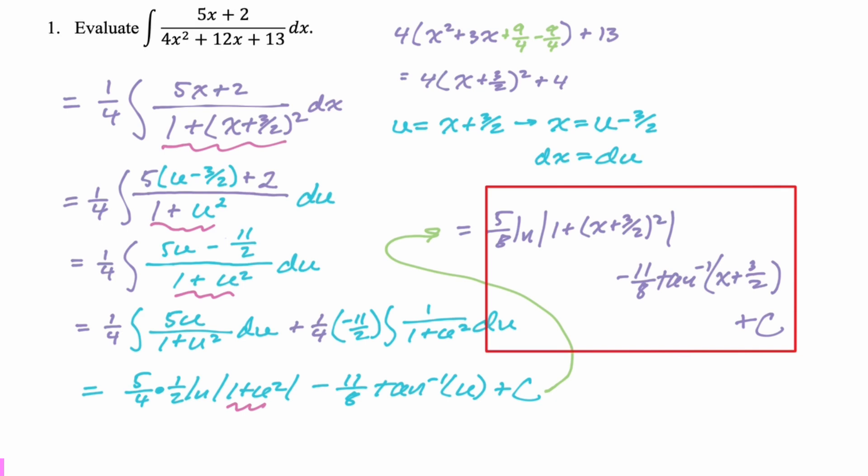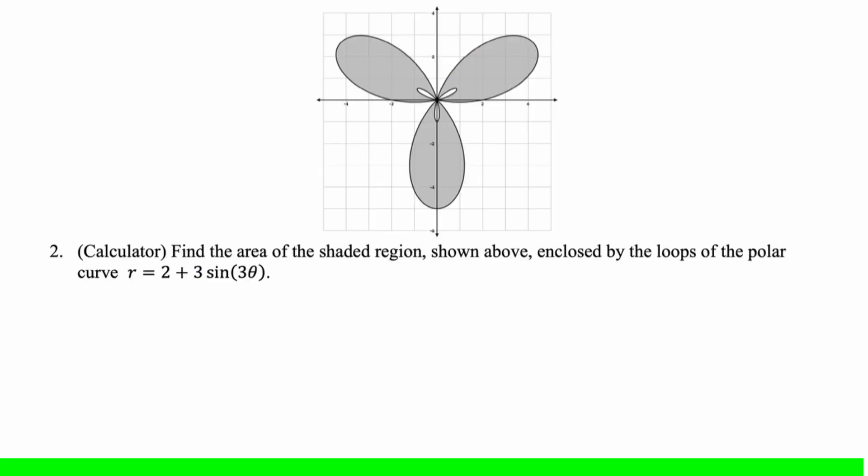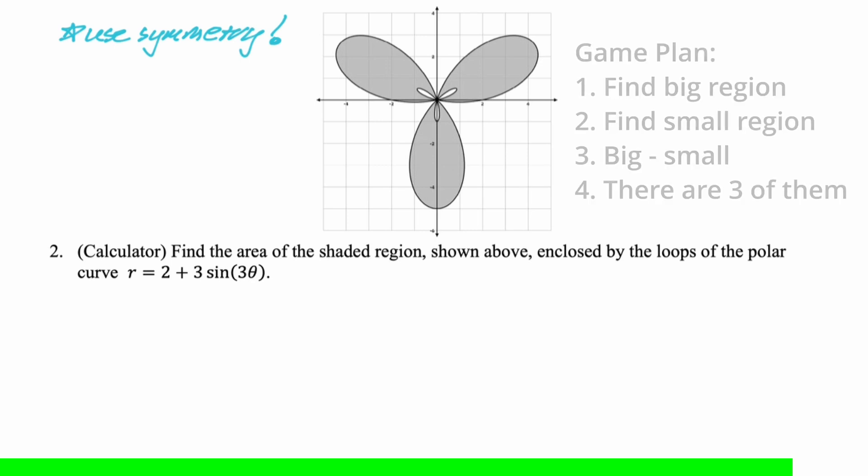All right. Good problem. Let's take a look at the next one. So this one's calculator. And it's a little complicated. So I actually decided that I would just record the calculator part and I'll put it in. We're going to make use of symmetry on this. So I look at this picture. It says, find the area of the shaded region shown above enclosed by the loops of the polar curve r equals 2 plus 3 sine of 3 theta, which is not a famous polar curve. I mean, it's probably famous, but it's definitely not top-tier famous. So I'm going to switch over to the calculator.